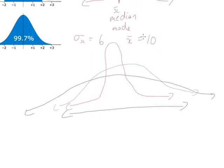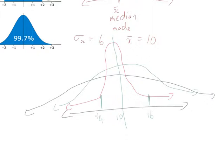So the average in the middle is 10, and standard deviation is 6. That means one standard deviation above the mean is 16, and one standard deviation below the mean is 4. So 10 minus 6 gets you to 4, and 10 plus 6 gets you to 16. If you took two standard deviations away, two standard deviations below would be minus 2, and two standard deviations above would be 22.